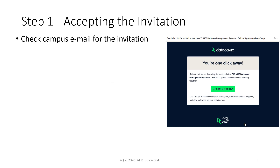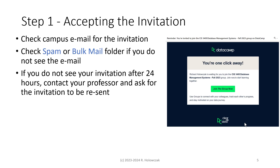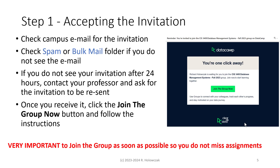Step 1 is to accept the invitation. Check your campus email for your invitation. Be sure to check your spam and bulk mail folder if you don't see the email. If you do not see your invitation after 24 hours, contact your professor and ask for the invitation to be re-sent. Once you receive the invitation, click the Join the Group Now button and follow the instructions. It's very important to join the group as soon as possible so you do not miss assignments.